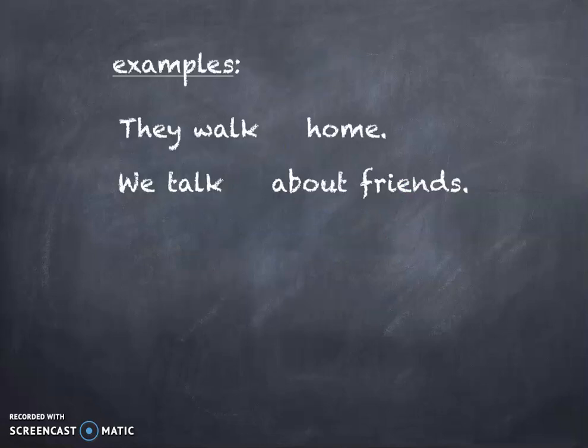So let's look at some examples. 'They walk home' and 'we talk about friends' are sentences in the simple present. Now we want to make these sentences in simple past. The only thing you do is add an 'ed', and you have a simple past sentence. 'They walked home' is simple past. You add the 'ed' to 'talk' and you get 'talked' — 'we talked about friends', simple past.